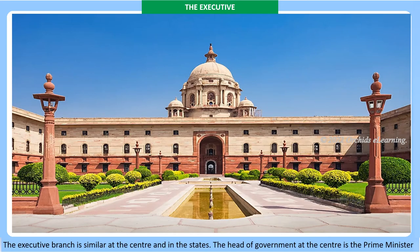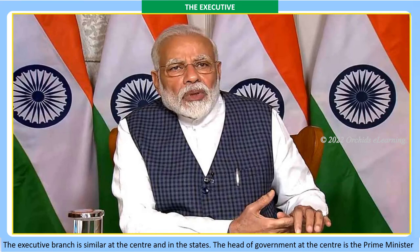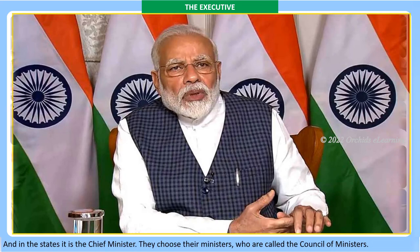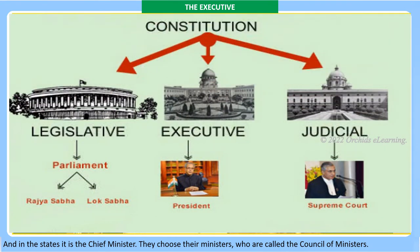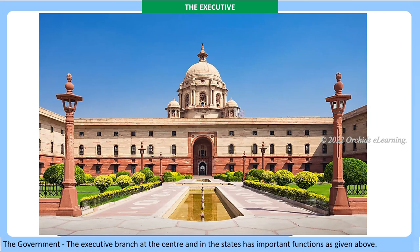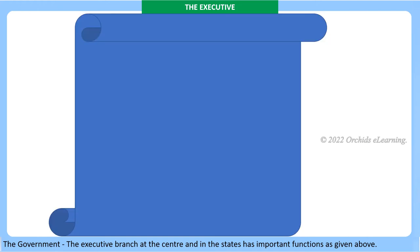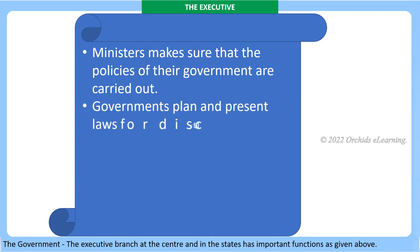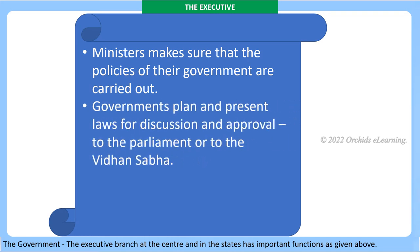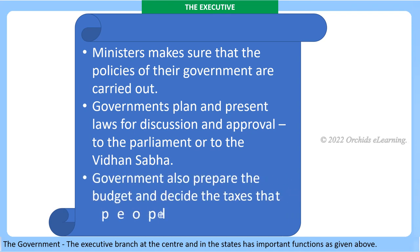The executive branch is similar at the center and in the states. The head of government at the center is the Prime Minister and in the states it is the Chief Minister. They choose their ministers, who are called the Council of Ministers. Ministers make sure that the policies of their government are carried out. Governments plan and present laws for discussion and approval to Parliament or to the Vidhan Sabha. The government also prepares the budget and decides the taxes that people have to pay.